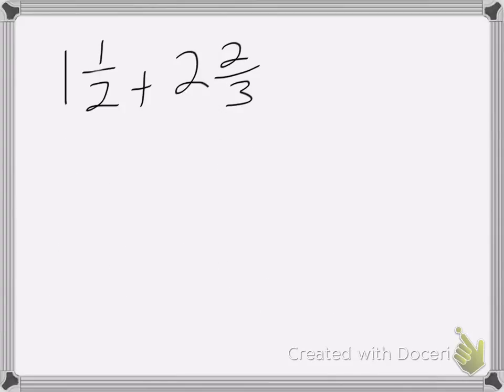All right, so here I have another one, 1½ plus 2⅔, and again here, I need to change the denominators, but now I don't have a number easily found. It's not right there that I can change it into, so I will need to change both numbers.